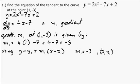Just to write this again: m1 equals minus 3. Just to remind ourselves, (x1, y1) is the point that is given, which is (1, -3).